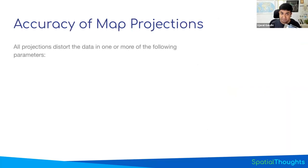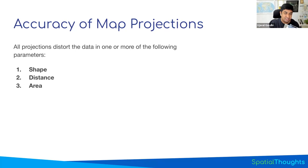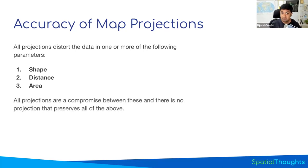None of the map projections can preserve all three parameters perfectly. The three parameters of concern when converting from a spherical surface to a planar surface are: shape (will a square on the surface still be a square?), distance (will the distance between two points remain the same?), and area (will equal areas remain equal after projection?). Most projections represent a compromise between these three. There's no one projection that can preserve all three perfectly, but many projections make a good compromise — for a small enough region, you can accurately preserve all three within a certain tolerance.